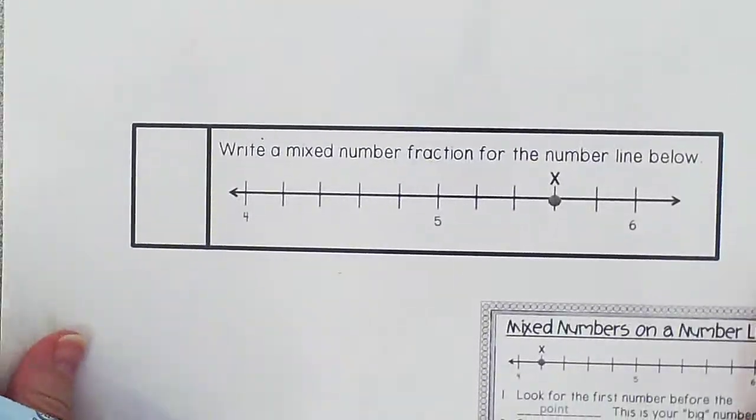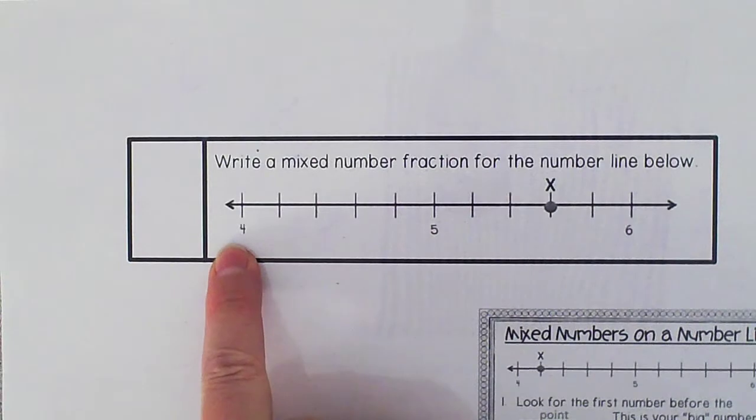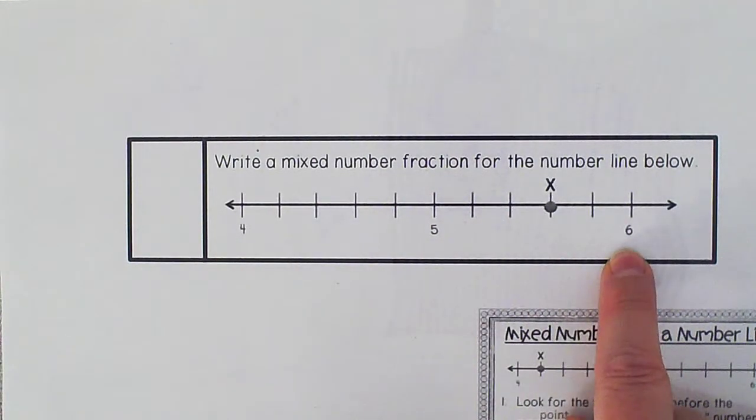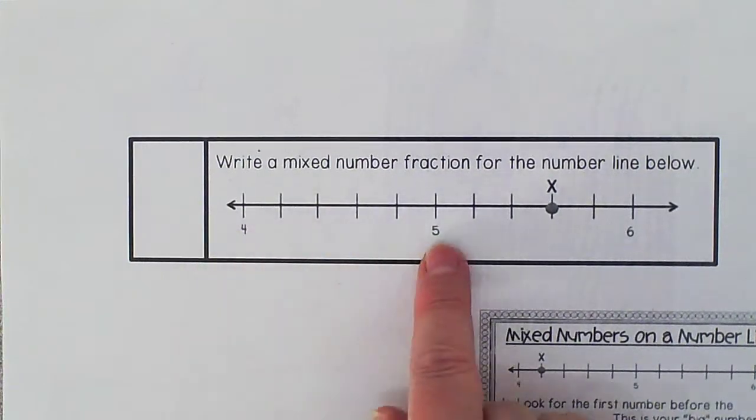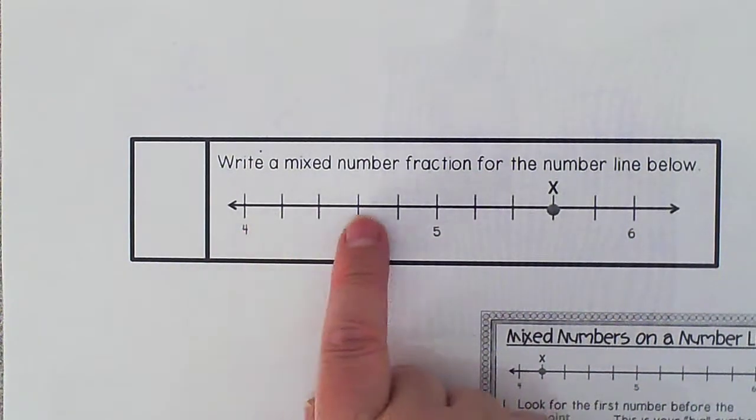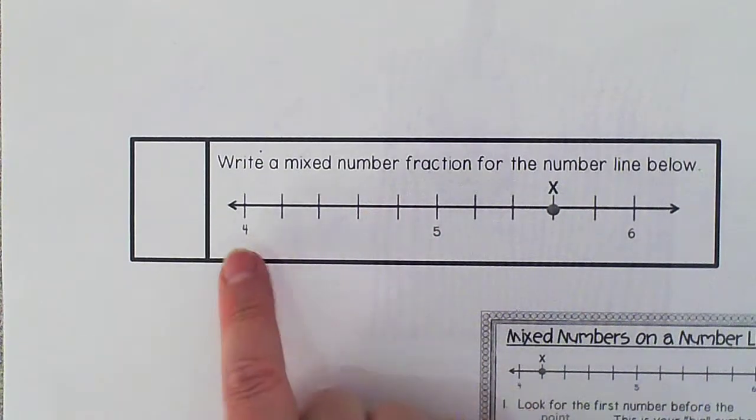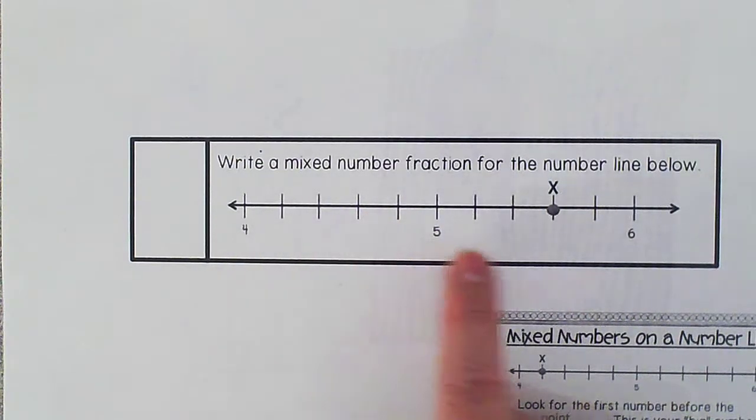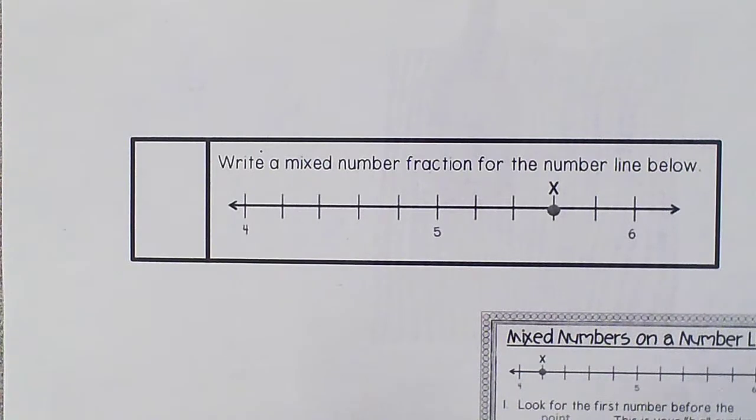Now, we need to talk about mixed number number lines. Notice when you look at these number lines, they don't begin with a 0 and they're not ending with a 1. I see a whole lot of different numbers here, and I see a lot of little marks in between. Each number you see is your whole number, your big number. But we still have to count on this line to find our mixed number.